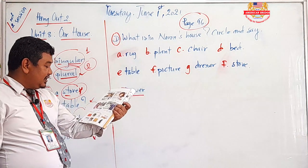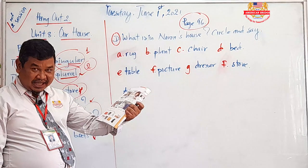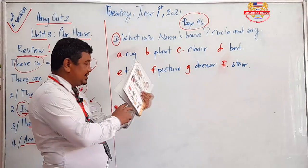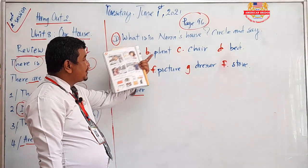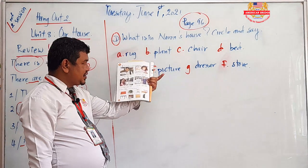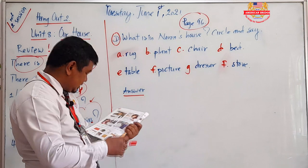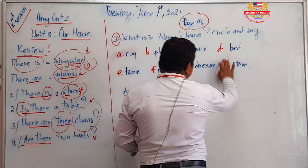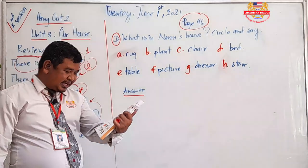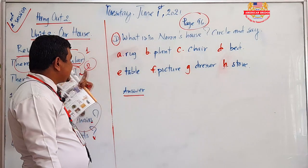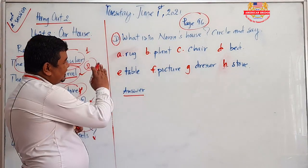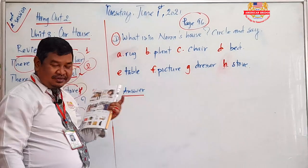The items to check are: a) rack, b) plane, c) chair, d) bed, e) table, f) picture, g) treasures, h) stove. So we have eight items labeled a through h to identify in Narom's house.